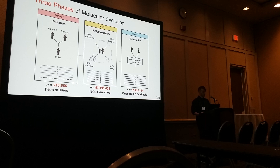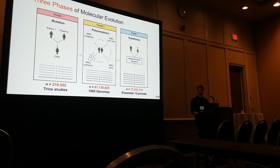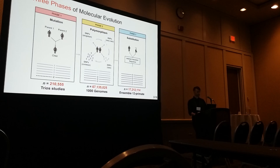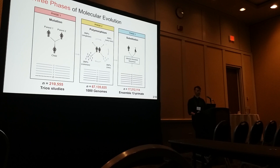For phase two, polymorphism, we obtained 67 million SNPs from the 1000 Genomes Project. These were SNPs limited to those that we could, with very high confidence, polarize using outgroups. So if it wasn't clear what the ancestral state was, we excluded it. And then finally, substitutions — fixed differences along the human lineage — were inferred from the Ensembl 12-way primate alignment.